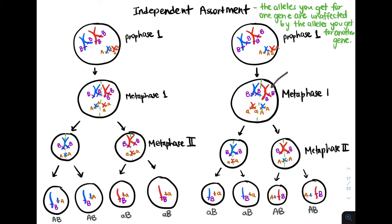This difference in the resulting alleles in those gametes is because chromosomes line up independently of each other on the metaphase plate. If you imagine 23 pairs of chromosomes lining up along the metaphase plate in our human body, with each chromosome aligning randomly and independently, there are numerous combinations of alleles that you can get for genes — all because of independent assortment and the fact that the alleles you get for one gene are not affected by the alleles you get for another gene.